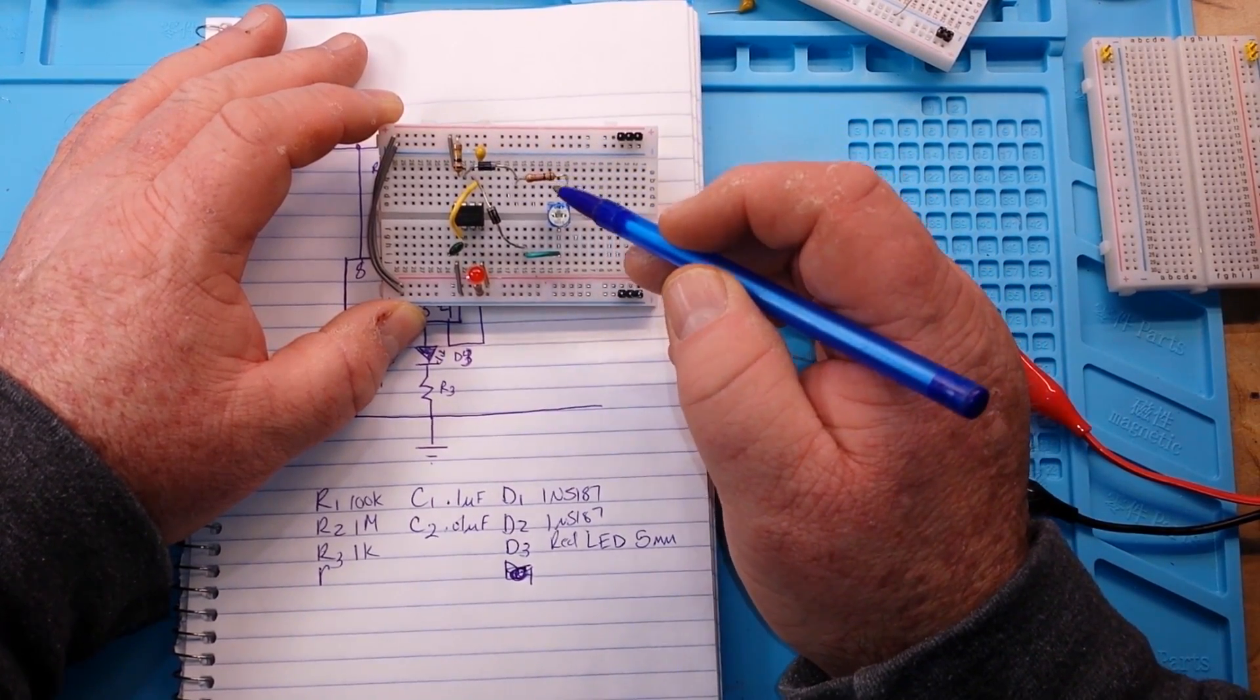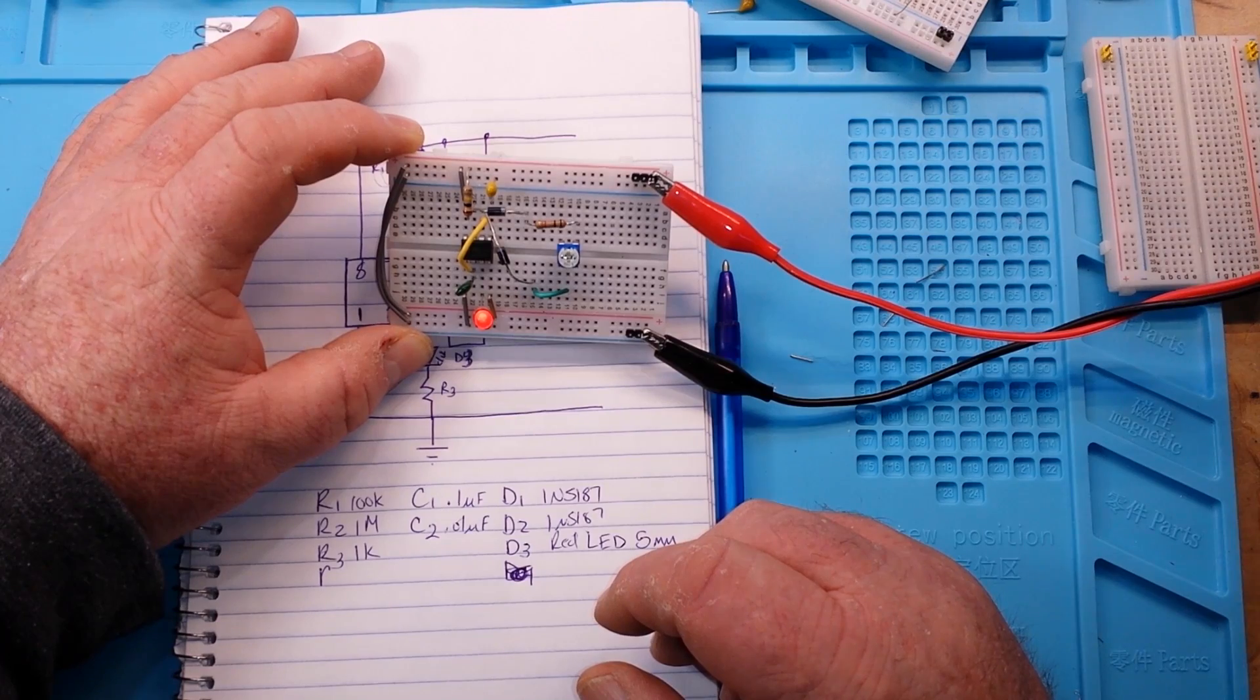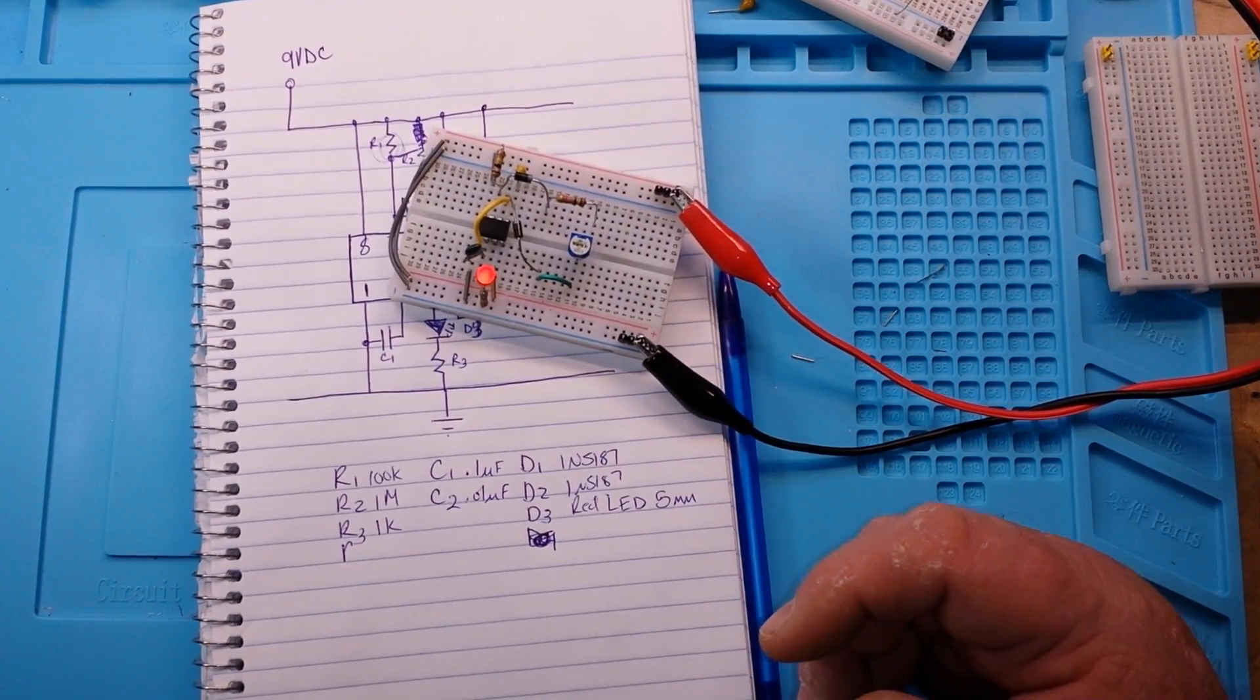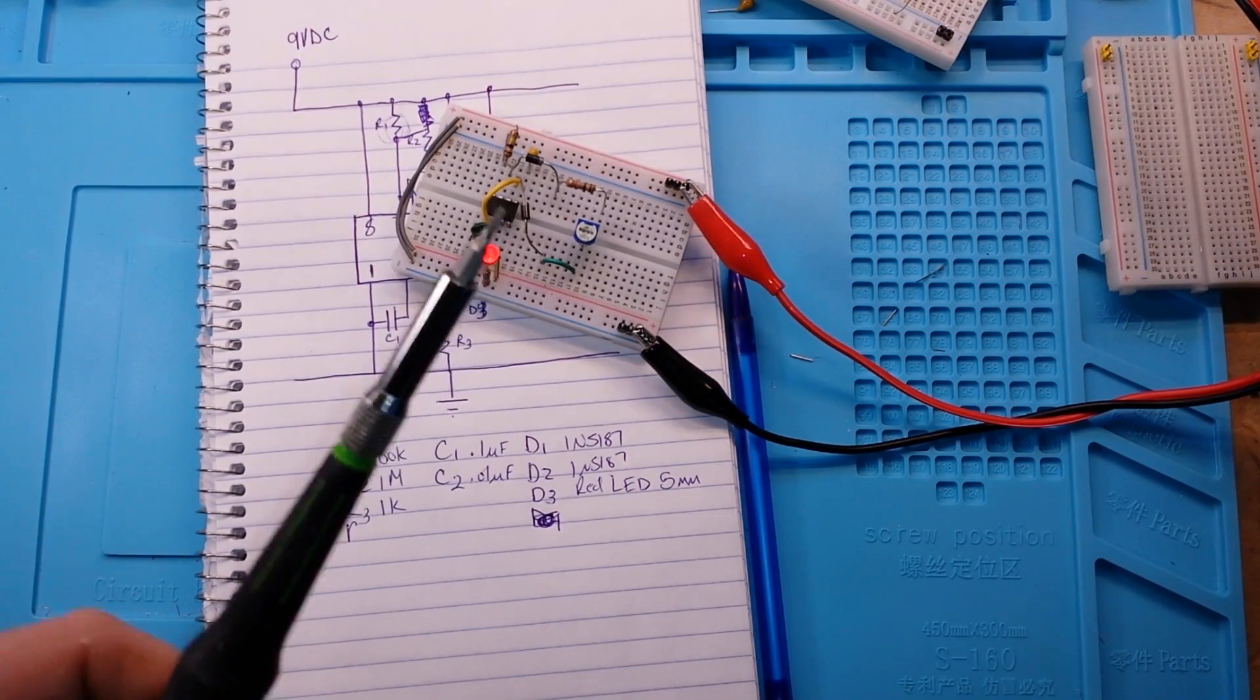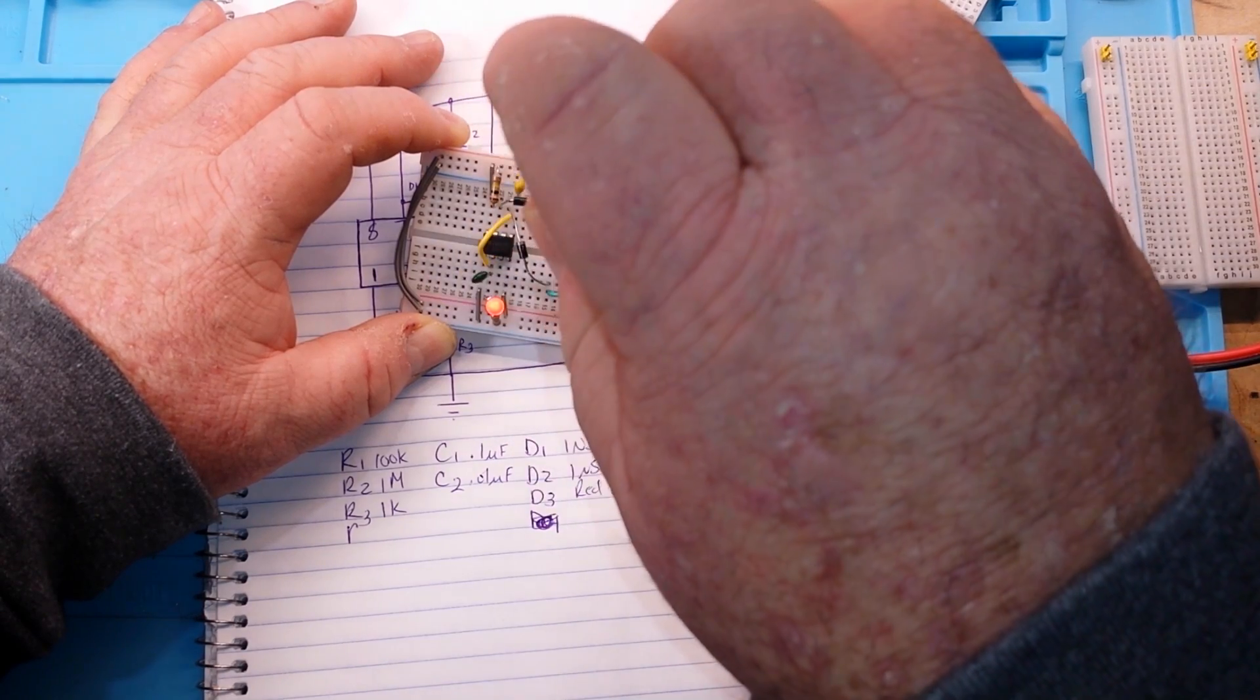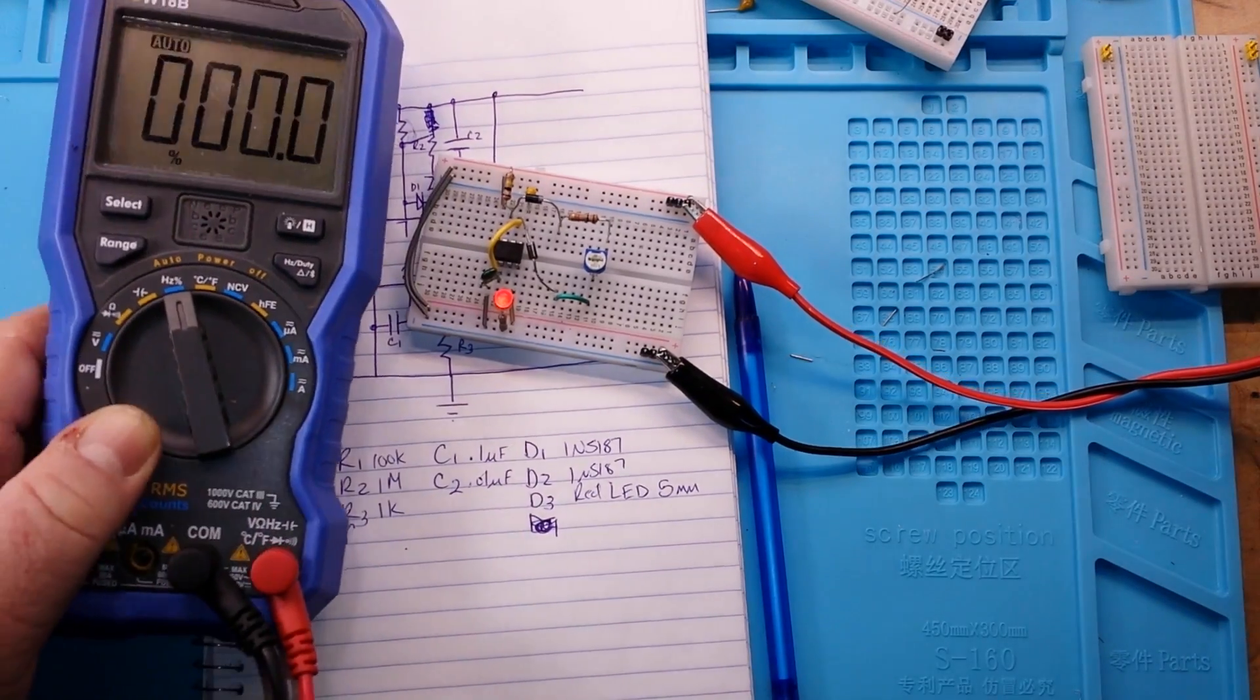So what we now have is this resistor controlling the charge time and this resistor and variable resistor here controlling the charge time. If I power this up, you can kind of see it flickering. By adjusting this it'll look like it got brighter to you and dimmer. By adjusting this we can control the duty cycle of our timer.